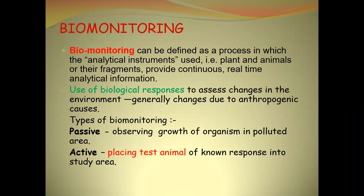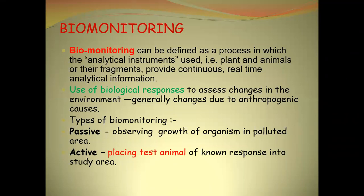Another term is bio-monitoring. Biomonitoring means a process in which an analytical instrument is used — that is plants and animals or their fragments — that provide continuous real-time information. If we give any test organism or test animal to a particular area to check its present situation, it is called active bio-monitoring. For example, if we add a bioluminescent organism to an environment and the presence of some chemical is determined by the bioluminescence feature of that organism, that is active bio-monitoring. If we do not add any organism and the presence of that particular organism itself denotes the situation, it is called passive bio-monitoring.